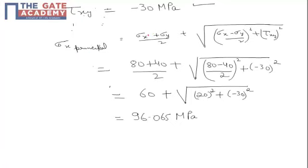So major principal stress is given by sigma x plus sigma y by 2, plus under root of sigma x minus sigma y by 2 square, plus tau xy square.